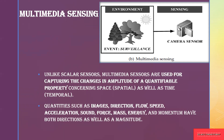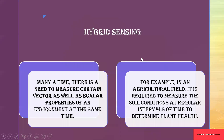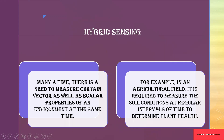Moving on to hybrid sensing — scalar sensing measures scalar values, multimedia sensing measures images and changes in amplitude, and hybrid sensing is used for measuring both scalar and vector quantities happening in the environment. The best example for hybrid sensing is an agricultural field: you can test the soil, check whether it is suited for a particular plant, monitor plant health, and check if there is enough water for the plant to grow.